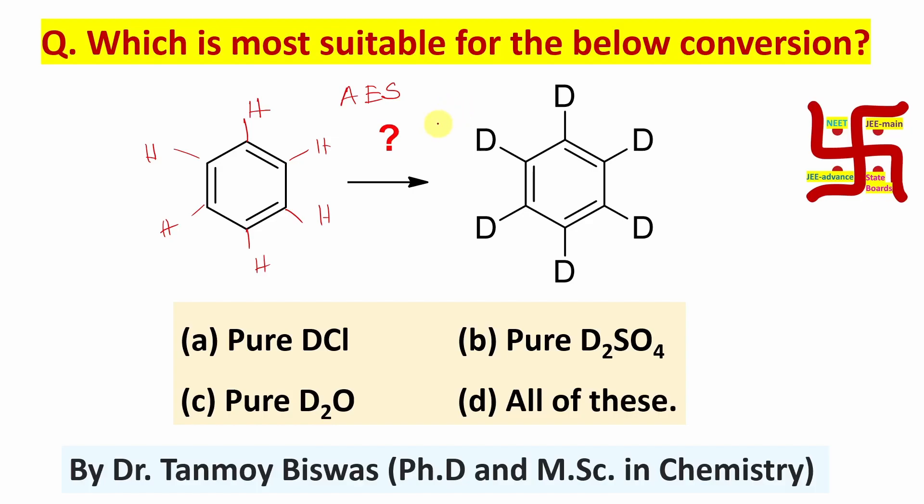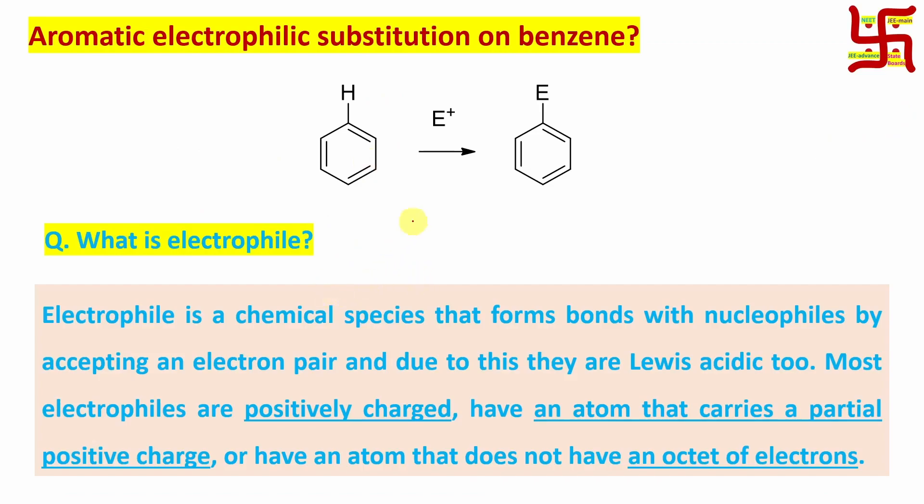Now aromatic electrophilic substitution could be achieved using some electrophile. Since the name says aromatic electrophilic substitution, let's learn a little bit about electrophile. In aromatic electrophilic substitution on benzene, this electrophile replaces this position and gets substituted benzene. What is electrophile? Electrophile is a chemical species that forms bonds with nucleophiles. We know benzene has six pi electrons in conjugation, so it's an electron rich system, behaving as nucleophile here.